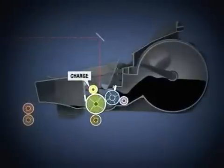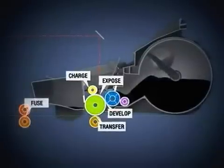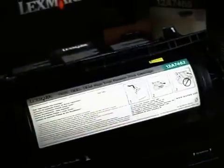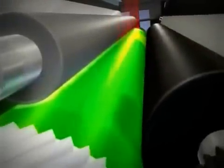There are six distinct processes involved in producing a laser printed page, all of which occur within the cartridge. Lexmark Laser Technology uses an electrophotographic process to transfer digital data to paper.